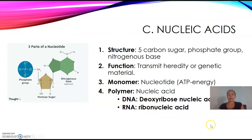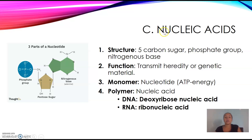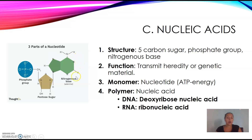The next macromolecule is nucleic acids. The structure consists of a five-carbon sugar — so one, two, three, four, five carbons, called a pentose sugar, with a C in each corner as shown in the picture. There's also a phosphate group, which has a phosphorus connected to different oxygen molecules, and a nitrogen base. So: five-carbon sugar, phosphate group, and nitrogen base. When you see this structure, you're looking at a nucleic acid. The function is to transmit heredity or genetics. If you see anything about genes, genetics, or heredity, you know you're talking about nucleic acids.